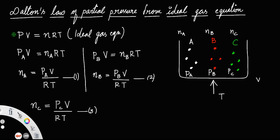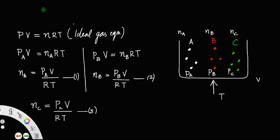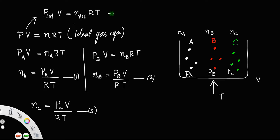Now, taking the ideal gas equation for the total pressure: P_total times V equals N_total times R times T, where P_total represents the total pressure due to all the gases and N_total represents the total number of moles. From this equation, N_total = P_total·V divided by RT. Let us call that equation number 4.